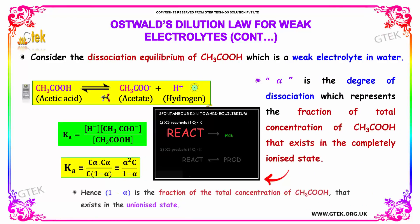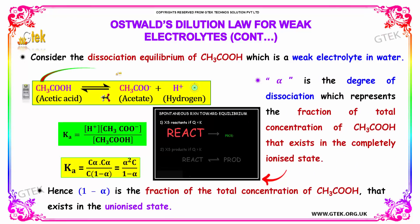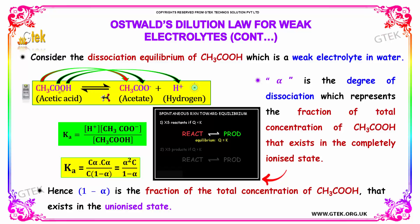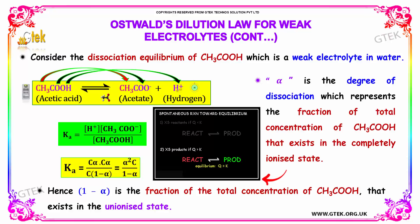Consider the dissociation equilibrium of Acetic Acid, which is a weak electrolyte in water. In water, Acetic Acid dissociates to give Acetate Ion and Hydrogen Ion.